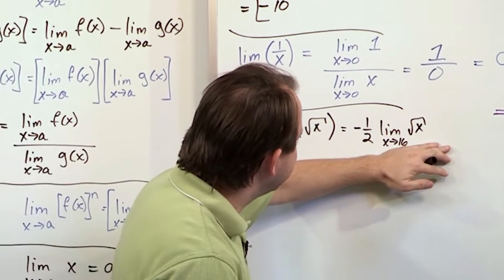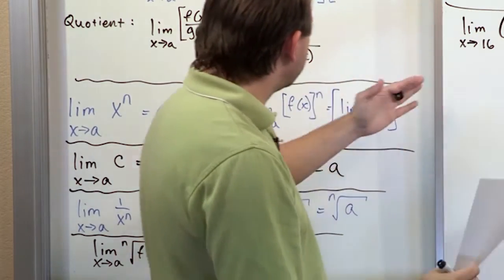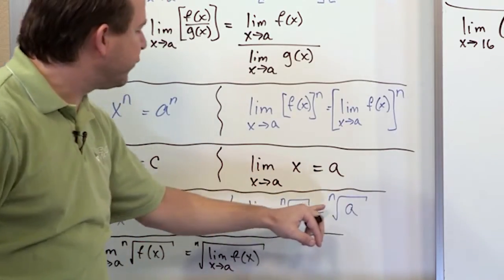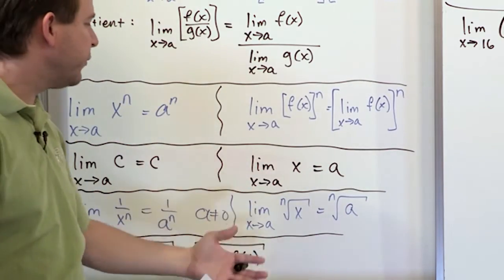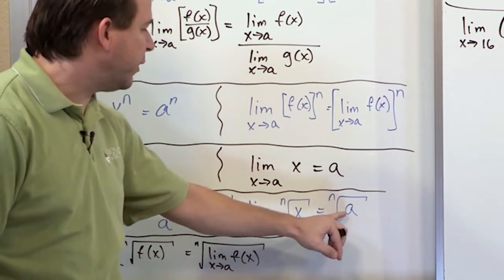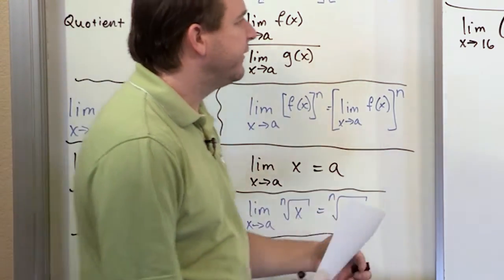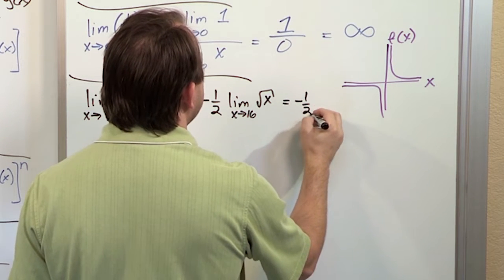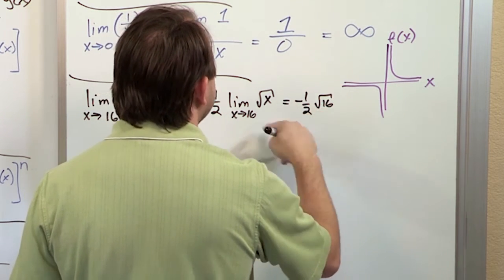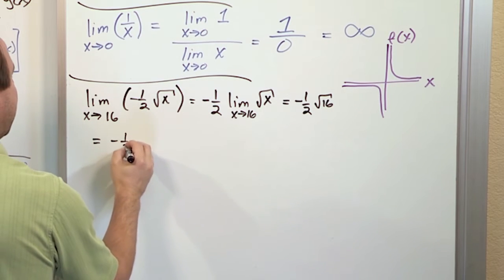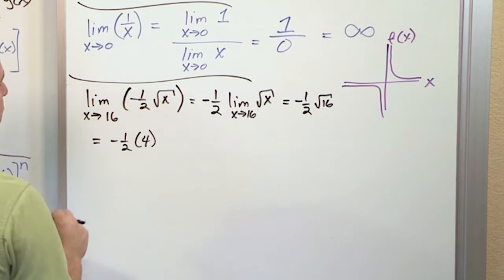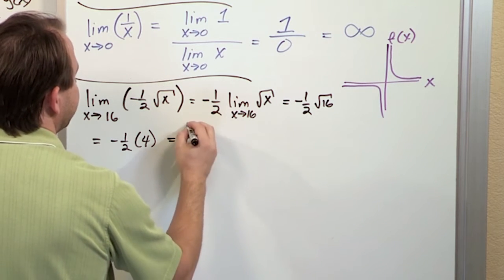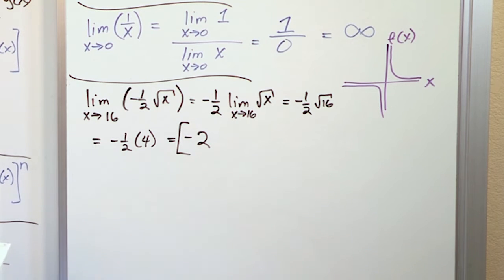So what happens is this becomes negative 1 half times the limit of x approaching 16 of the square root of x. Now how do I do this limit? You know you can plug it in. If you want a limit law, this is written as an nth root — a square root in our case — so you basically plug in the value and take the square root. So what we have is negative 1 half times the square root of 16, which is negative 1 half times 4, giving us negative 2. That's the final answer.